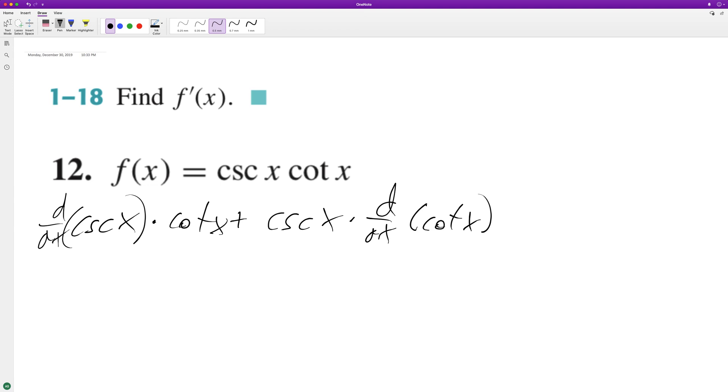So the derivative of the cosecant of x is going to be negative cosecant of x cotangent of x times the cotangent of x.